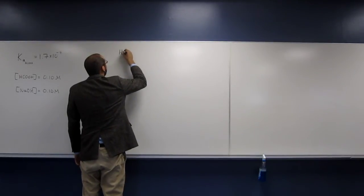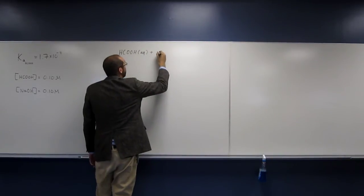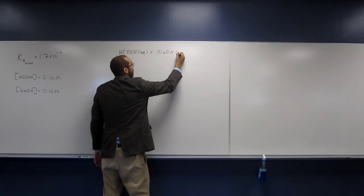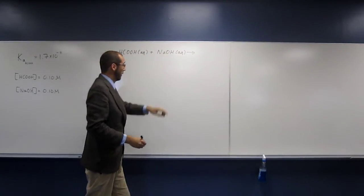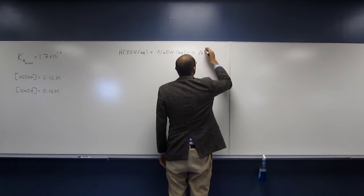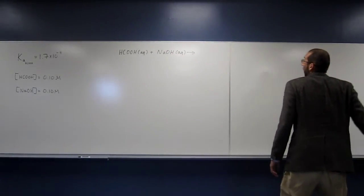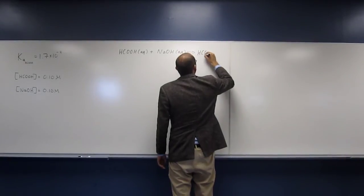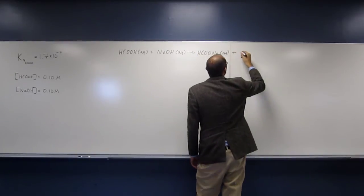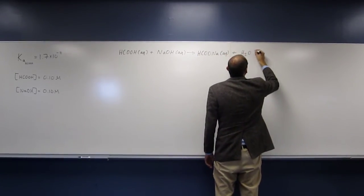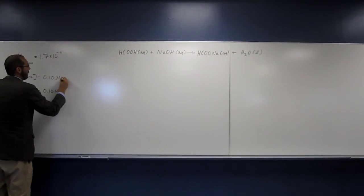Formic acid plus sodium hydroxide. So strong base reacting with a weak acid is going to go all the way. So we get, let's do it this way. Formic acid plus water.